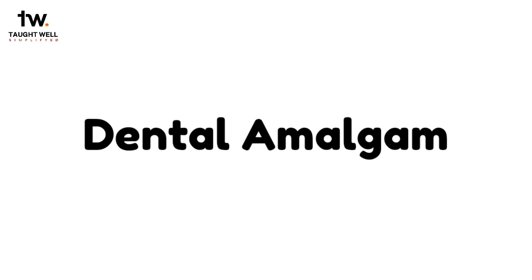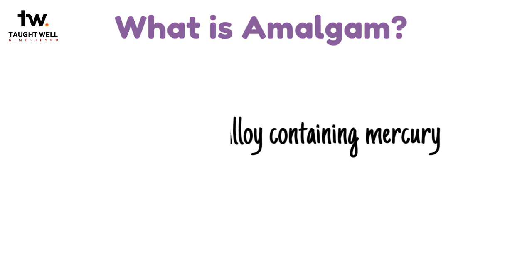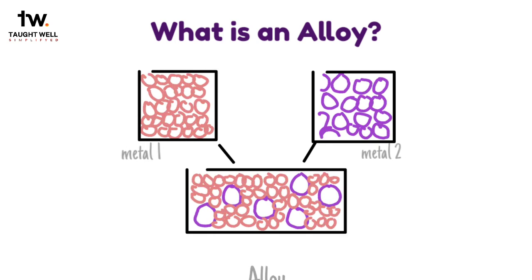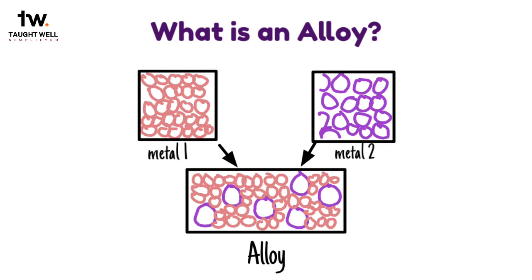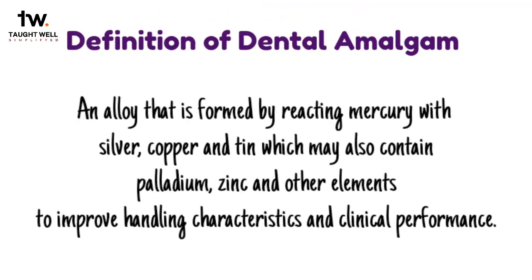Let's go through some key terms we should know when we talk about amalgam. Firstly, what is amalgam? Amalgam is an alloy which contains mercury. An alloy is a metal made by combining two or more metallic elements, especially to give greater strength or resistance to corrosion. The technical definition for dental amalgam is an alloy that is formed by reacting mercury with silver, copper and tin, which may also contain palladium, zinc and other elements to improve handling characteristics and clinical performance.